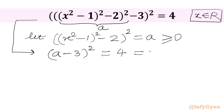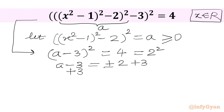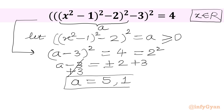Our equation will become (a - 3)² = 4, or we can write 4 as 2². Now we will take square root of both sides and write a - 3 = ±2. Now I will add 3 to both sides. We will get a = 3 + 2 = 5, and 3 - 2 = 1. So we are getting both a values positive, and as per our condition it should be positive only. So we accept both a = 5 and a = 1.